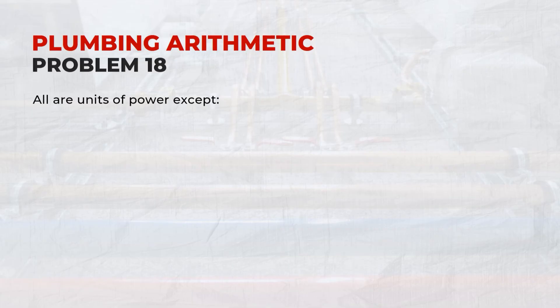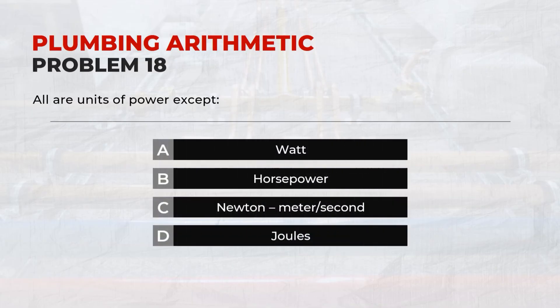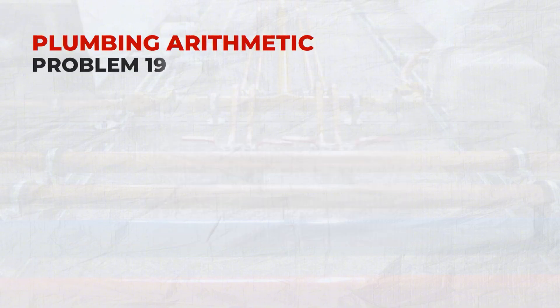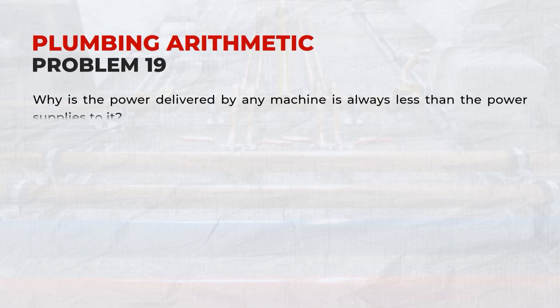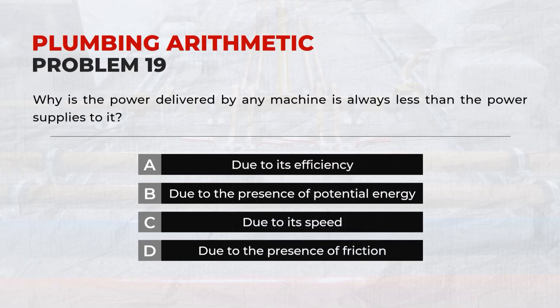All are units of power except: D. Joules. Why is the power delivered by any machine always less than the power supplied to it? D. Due to the presence of friction.